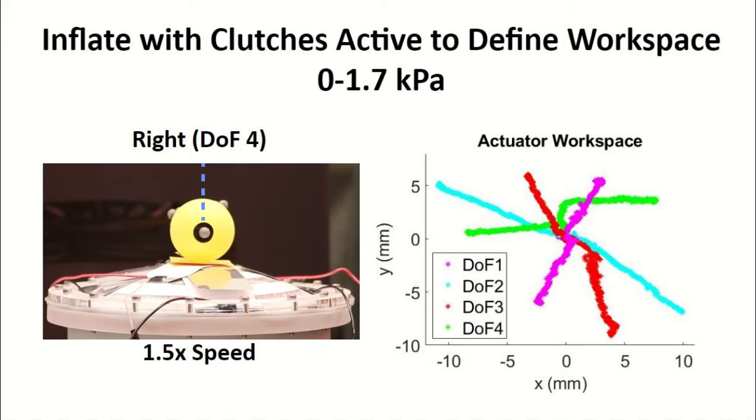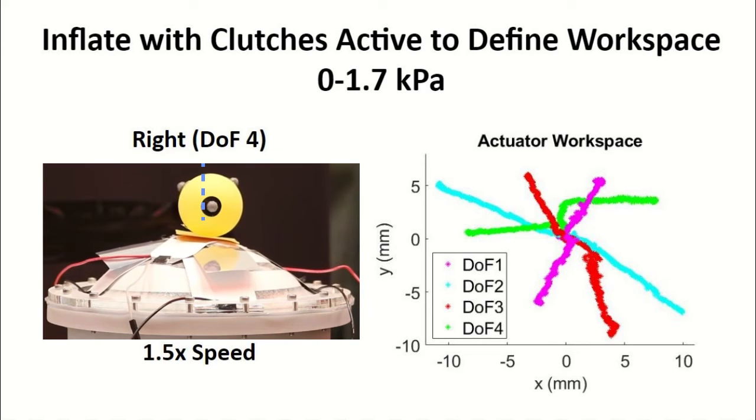We use either one or two perimeter clutches for directional manipulation in 5 degrees of freedom. This plot shows the XY positions that the actuator is able to reach.